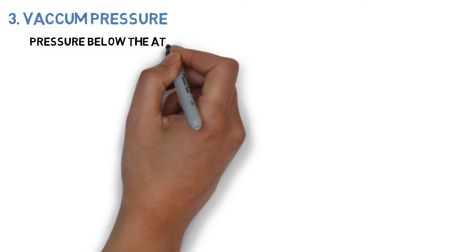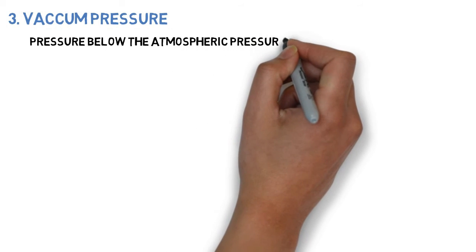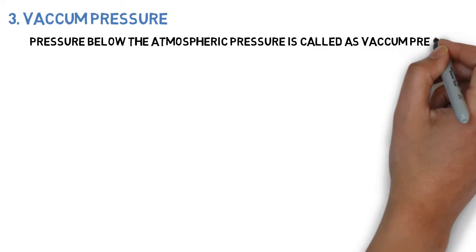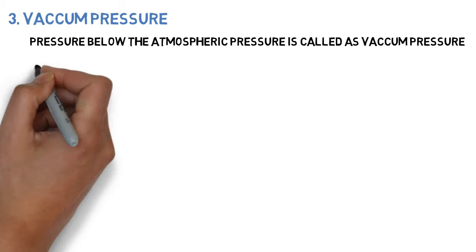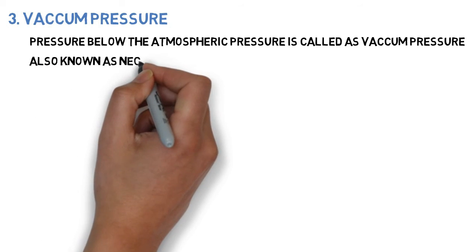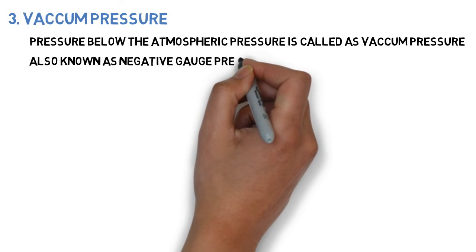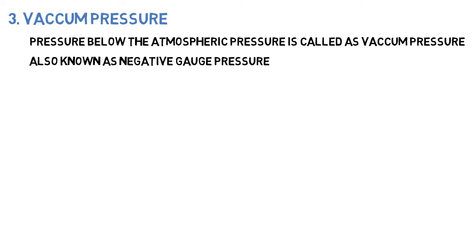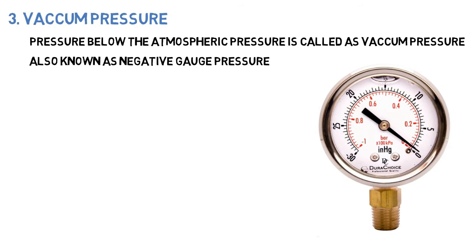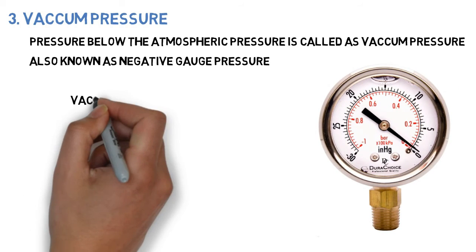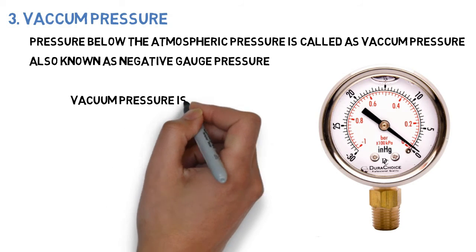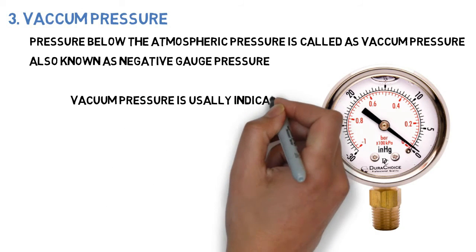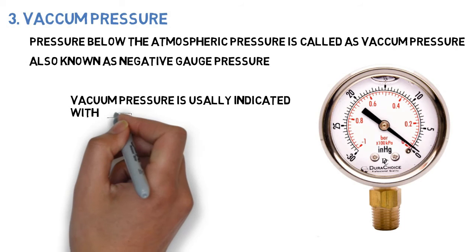Pressure below the atmospheric pressure is called vacuum pressure. Vacuum pressure is also known as negative gauge pressure. Vacuum pressure is usually indicated with a negative sign.